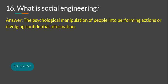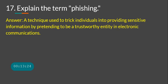What is social engineering? There is no technical control for it — it is the psychological manipulation of people into performing actions or divulging confidential information. The most common method is phishing email. Employee training is the primary defense. Phishing itself is a technique used to trick individuals into providing sensitive information by pretending to be a trustworthy entity in electronic communication.